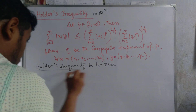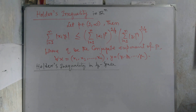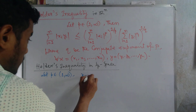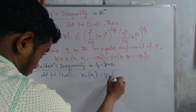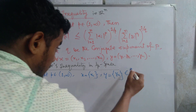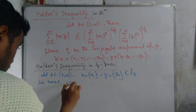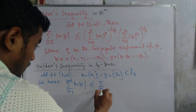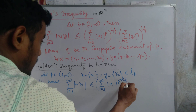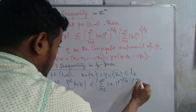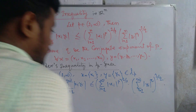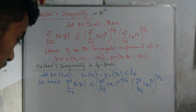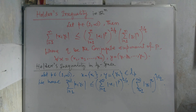Now we discuss Hölder's inequality in ℓᵖ space. Let p belong to (1, ∞) and x = (xₙ), y = (yₙ) be sequences belonging to ℓᵖ. Then Σᵢ₌₁^∞ |xᵢyᵢ| ≤ (Σᵢ₌₁^∞ |xᵢ|ᵖ)^(1/p) · (Σᵢ₌₁^∞ |yᵢ|ᵠ)^(1/q). This is Hölder's inequality in ℓᵖ space.